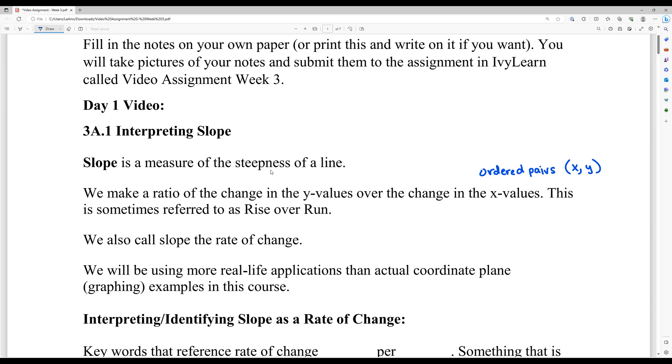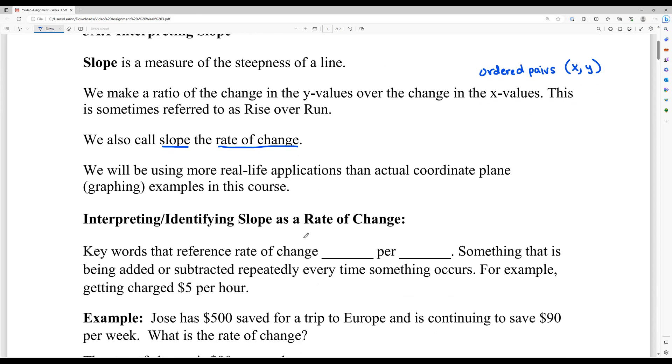We also will call the slope the rate of change. A lot of times that's how they'll ask for it in Newton. They'll be like, tell us the rate of change. We're going to actually be focusing more in this class on real life applications than actually picking out ordered pairs and graphing them. So we're going to focus on first interpreting and identifying the slope as a rate of change.